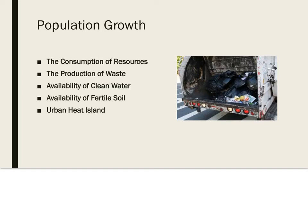Although three-fourths of the Earth is covered with water, not all of that water is pure enough to be consumed, and water may not always be immediately available to areas that are geographically landlocked. As populations increase in size, more land is needed to build shelters. However, by using more land for shelter, less land is available to plant crops and raise livestock such as cattle, pigs, and sheep. When humans cut down trees to build shelters, deforestation increases the amount of carbon dioxide and reduces the amount of oxygen in the atmosphere.